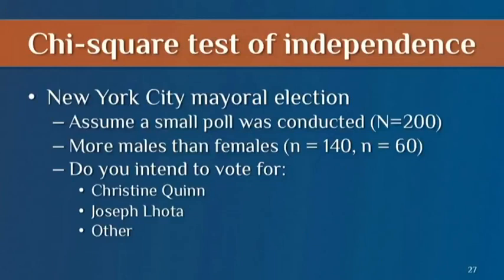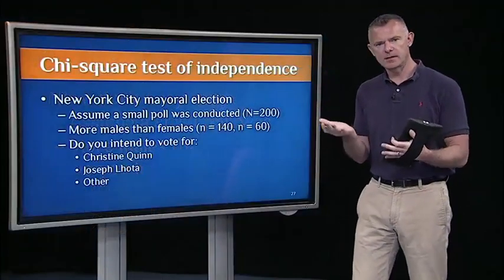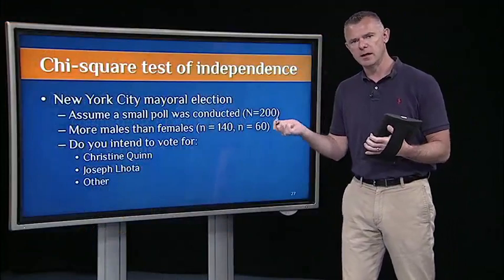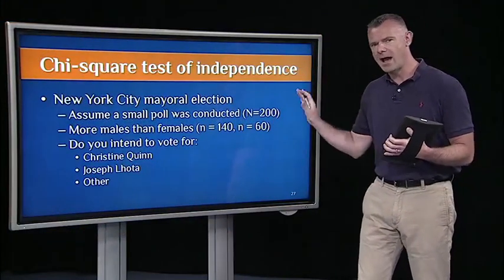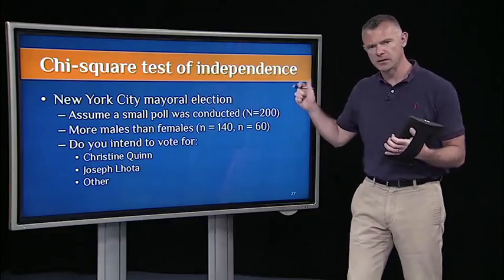Let's assume a small poll — a little bit bigger than the one we looked at in segment 1, but still just 200 likely voters. That's considered small. And just to make this interesting and to show you how the Chi-Square Test of Independence works, we'll look at a poll that has more males than females. I did this on purpose so we can see more about how this test of independence works and make you think about the contingency table.